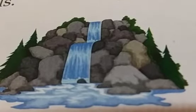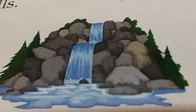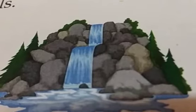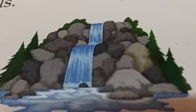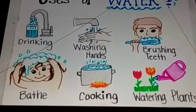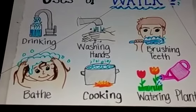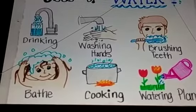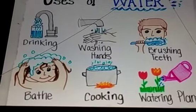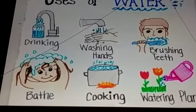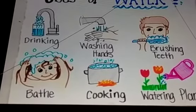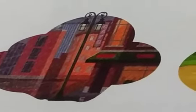Now we have learned about air. Let us learn about water. Water is also very precious — all living things need water to live. We cannot live without it. Water is used for washing clothes, cooking, and cleaning. A farmer needs water to grow crops. We also need water to grow plants in a garden.